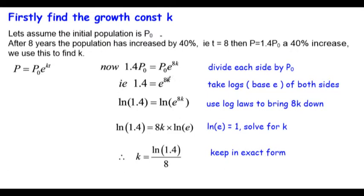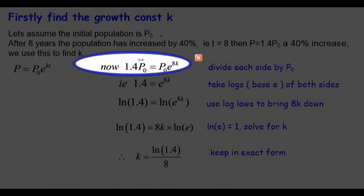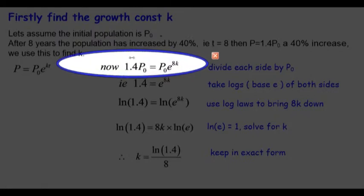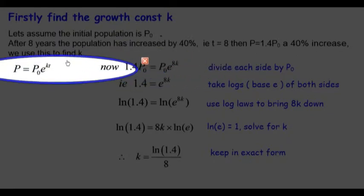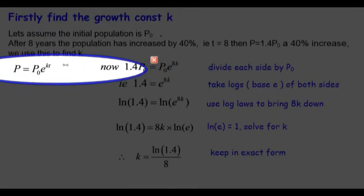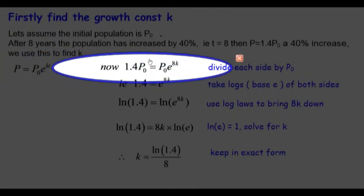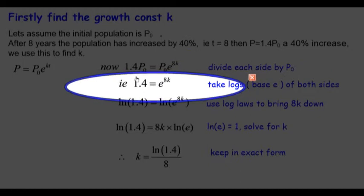I always keep k as the exact value to stop any round-off errors. We substitute this information in: the population at any particular time is P equals P₀e^(kt). So 1.4P₀ equals P₀e^(8k), where t equals 8. Divide both sides by P₀ and we get 1.4 equals e^(8k).